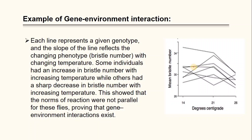Some individuals had an increase in bristle number with increasing temperature, while others had a sharp decrease in bristle number with increasing temperature. This showed that the norms of reaction were not parallel for these flies, providing evidence that gene-environment interaction exists. This is all about gene-environment interaction. Thank you.